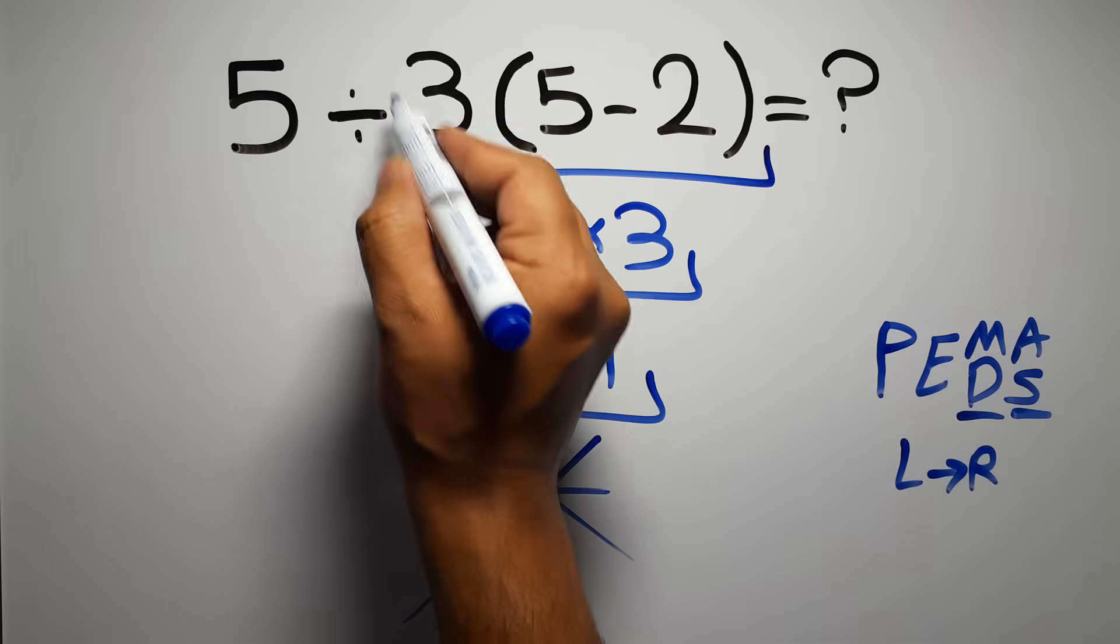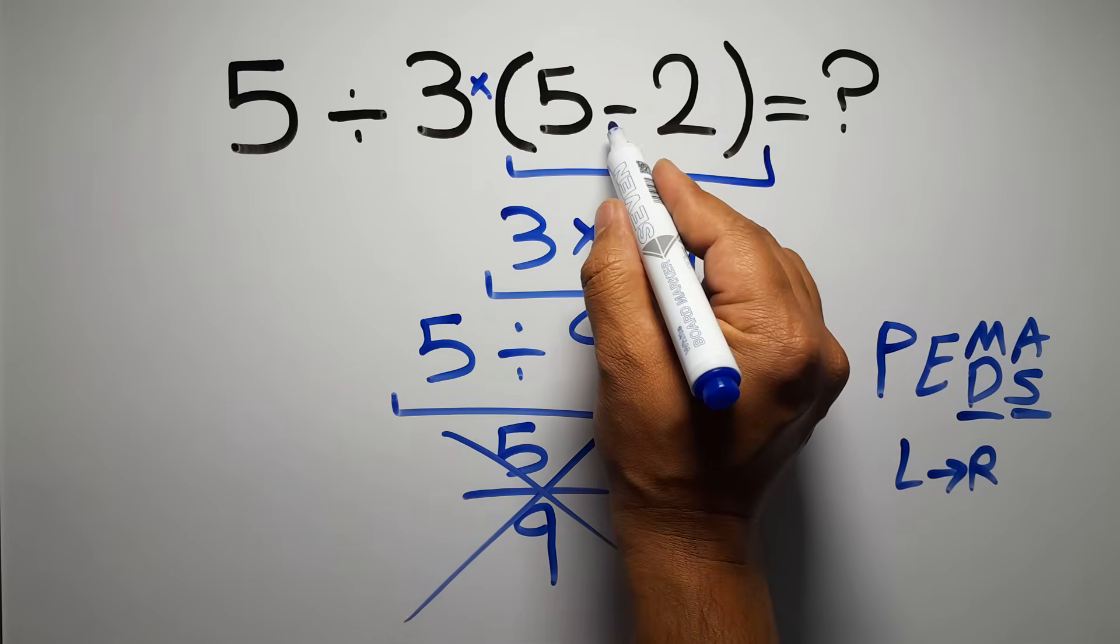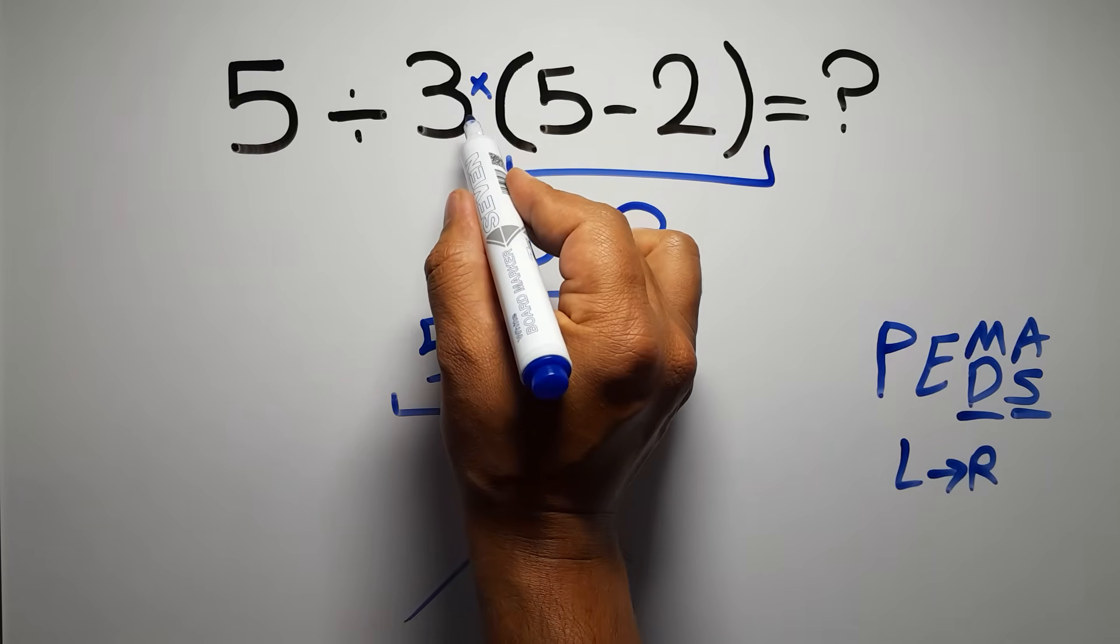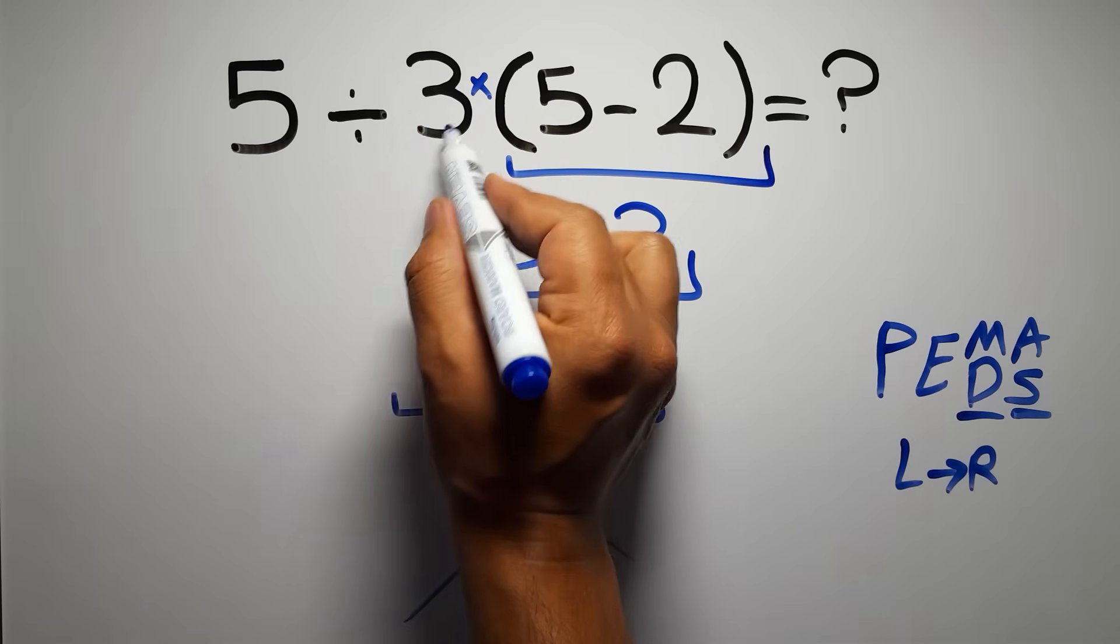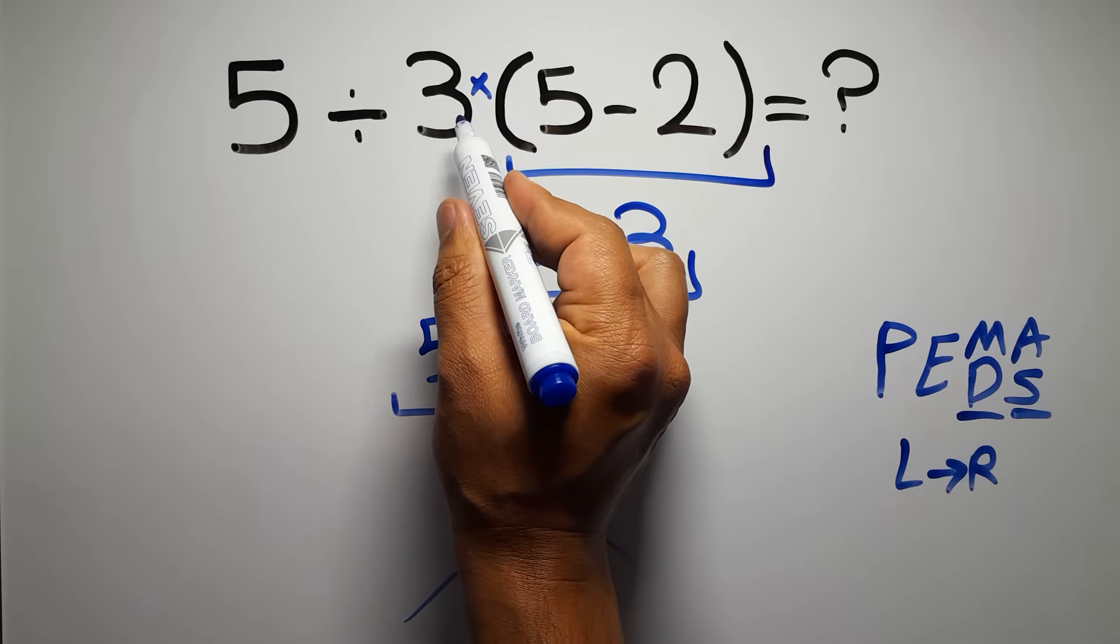In this expression we have one division, one multiplication, and one parentheses. Inside these parentheses we have one subtraction. We have a multiplication because in mathematics when a number is placed next to parentheses it means multiplication, and we usually don't write the multiplication sign for brevity.